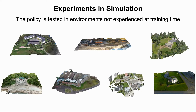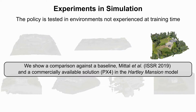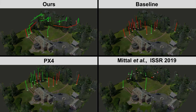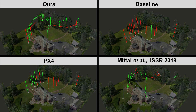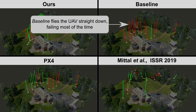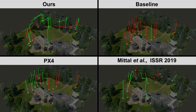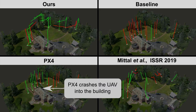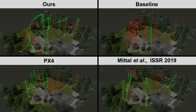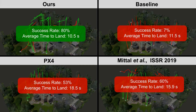We test our policy in environments not experienced in training. We show a comparison against a baseline, the approach by Mittal et al., and PX4 in one of the models. The successful runs are shown in green, while failures are shown in red. While our policy flies the UAVs to the ground safely, the baseline planner collides most of the time. The approach by PX4 also leads to collisions, while Mittal et al.'s approach generates long, intertwined paths. In this example, our planner reaches the highest success rate and the lowest time to land.